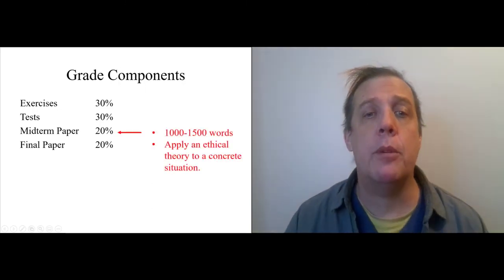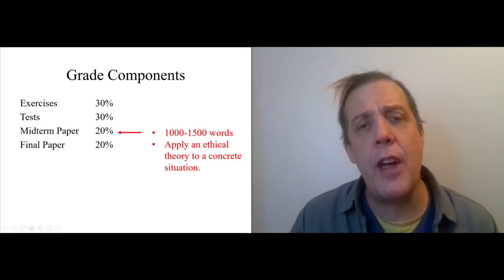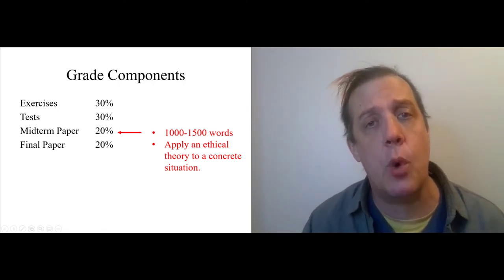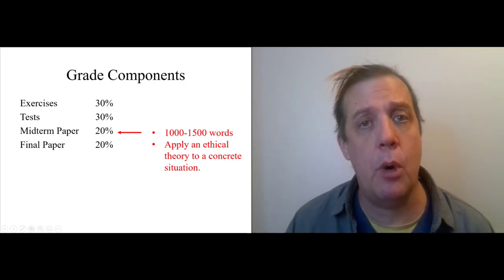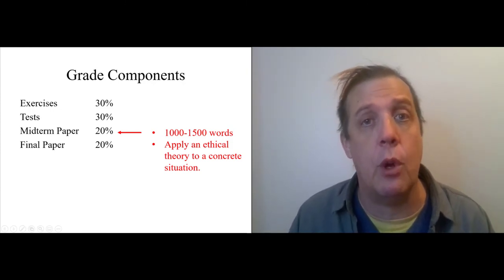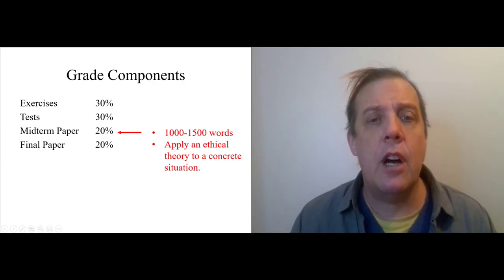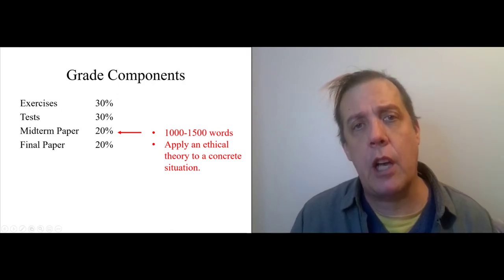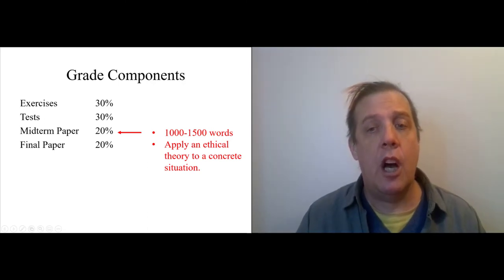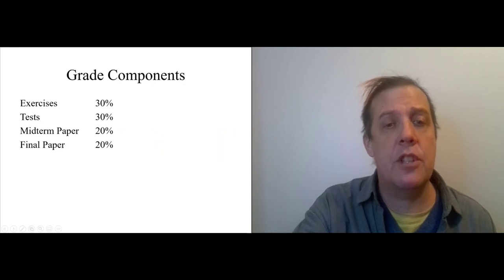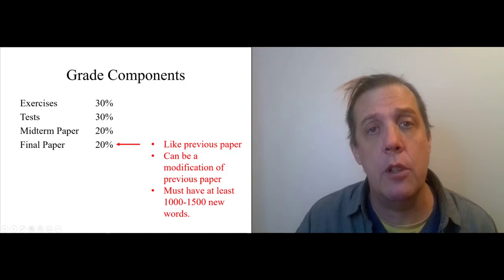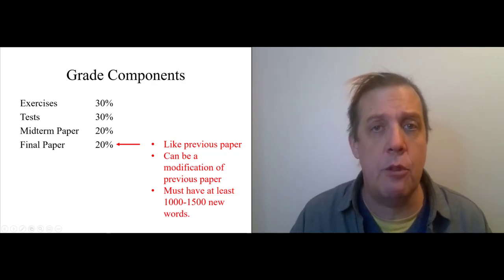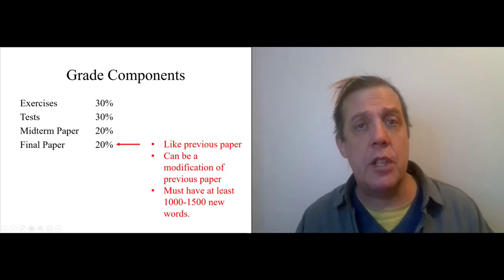So there's a midterm paper and a final paper. The midterm paper is going to be about 1,000 to 1,500 words, and it's going to be what we call an application paper. You're going to take a concept in this course and apply it to a situation. That could be a situation in the book or a situation maybe in your own life if you feel comfortable writing about your own life. The grade comes from seeing how well you articulate the relationship between the concepts and the reality that you're describing. The second paper is just like the first one. In fact, it can be a modification of the first one. You can just change the old paper, but you must have at least 1,000 new words. So you can't just move some commas around and call it a new draft. You have to really add material to it.